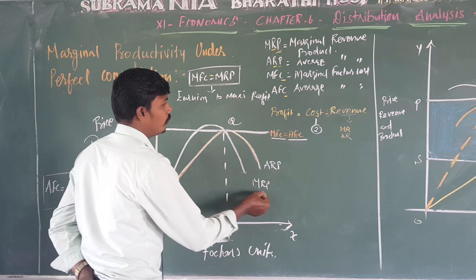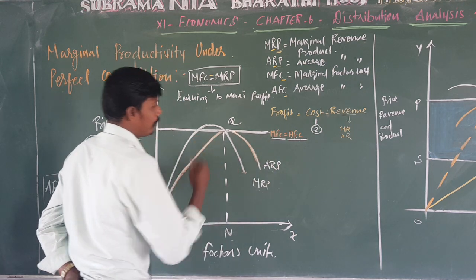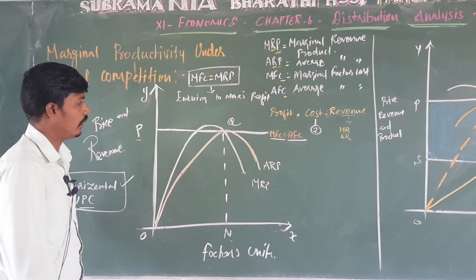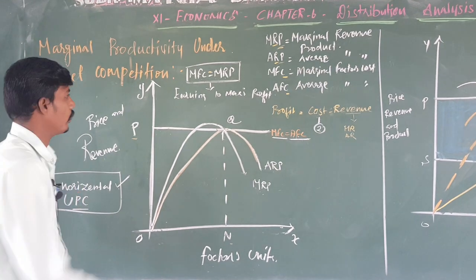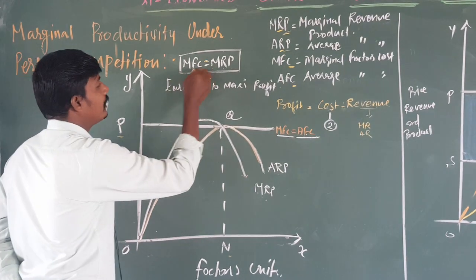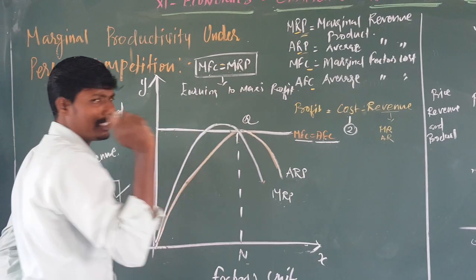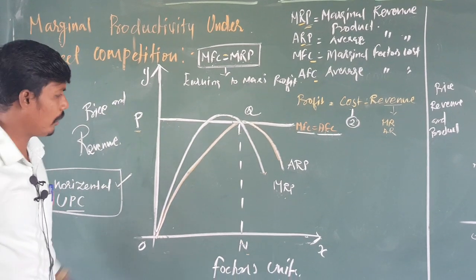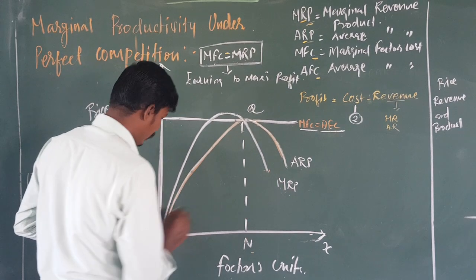MRP and MFC are in the same diagram. MFC equal to MRP — that is the equilibrium condition. We can see that MRP is a downward-sloping curve from left to right.